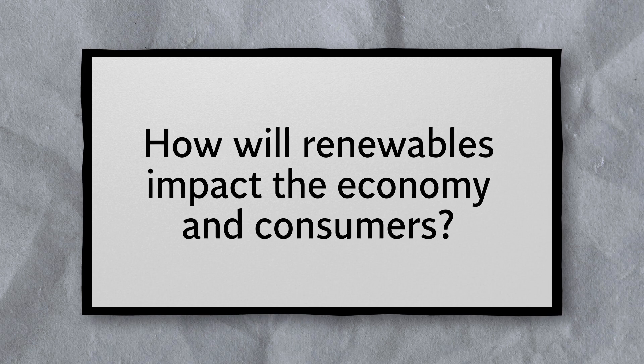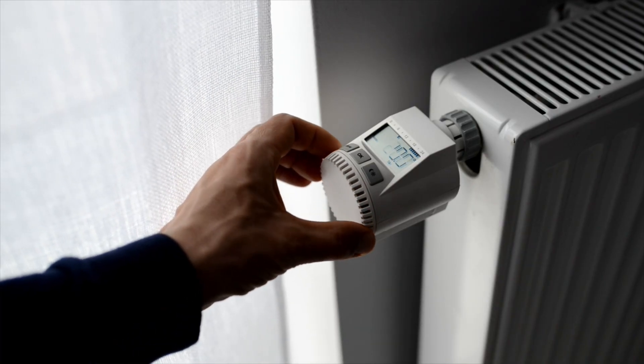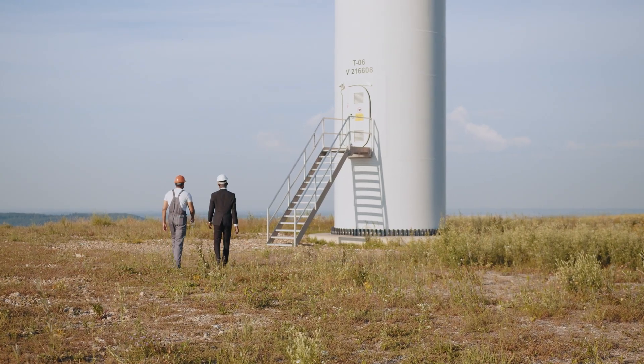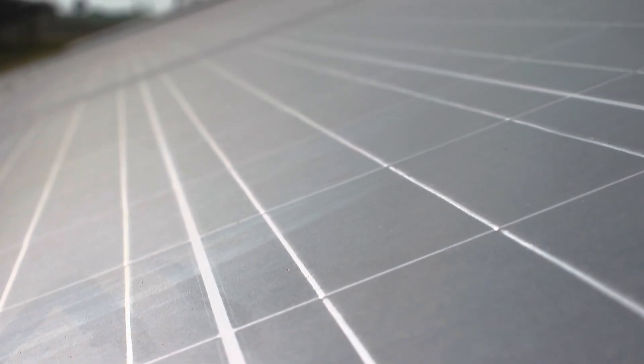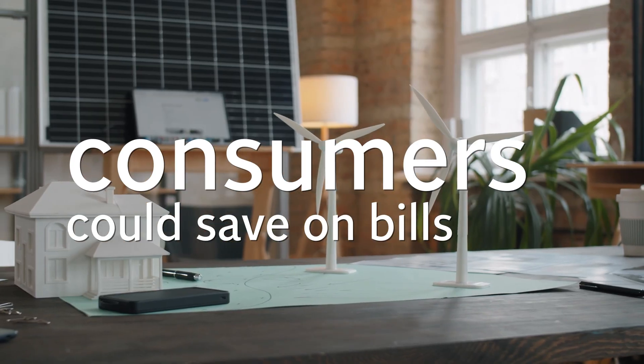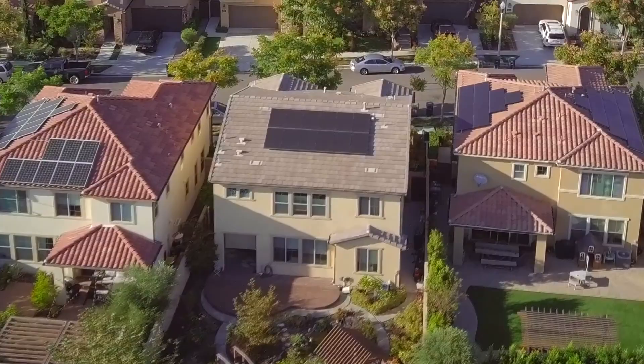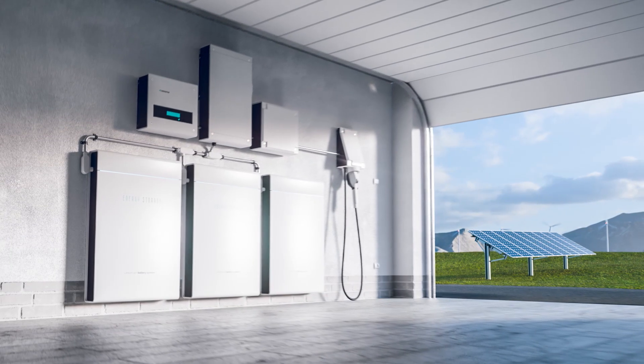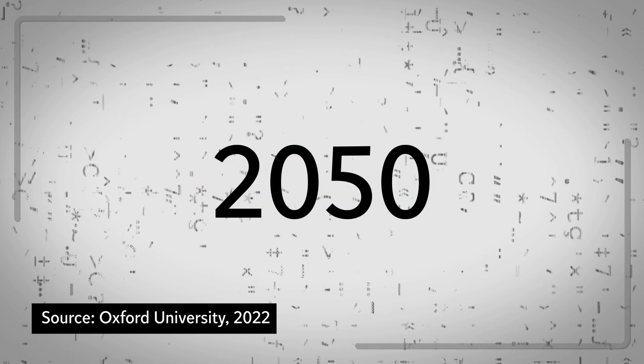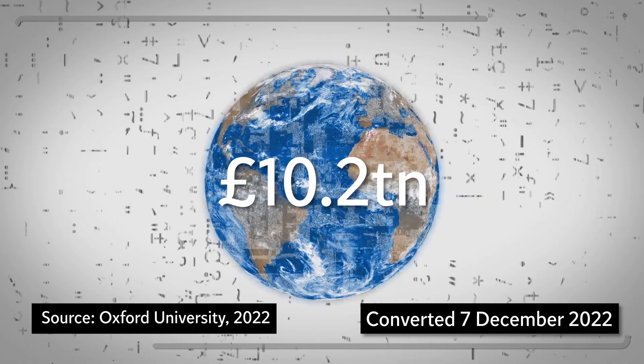How will renewables impact the economy and consumers? The cost of renewables, particularly solar and wind power, are getting cheaper per year. And it's expected to keep falling as investment in the sector continues. Energy providers have also stated that consumers could save on their electricity bills by installing certain infrastructure at home, such as solar panels and battery storage. And it's said that switching to renewables by 2050 could amount to saving as much as $12 trillion. That's over £10 trillion worldwide.